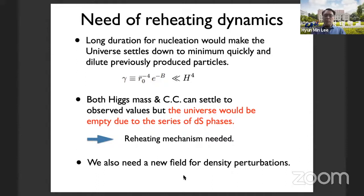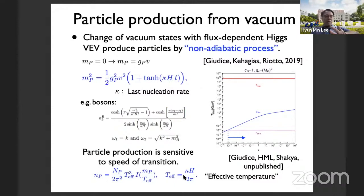The universe would be empty due to this series of de Sitter phases, because previously produced particles are diluted. Because of that, we need a reheating mechanism. We also need, because of the entropy problem and density perturbations for the CMB, new physics and new particles. Let me briefly discuss what happens without introducing new particles.